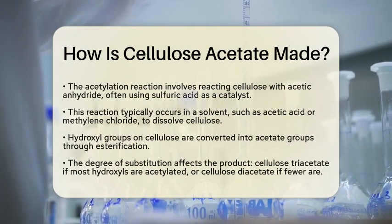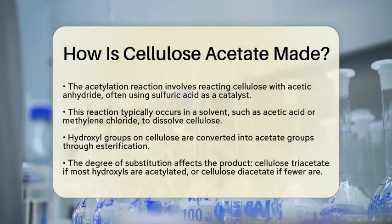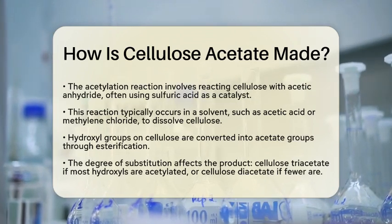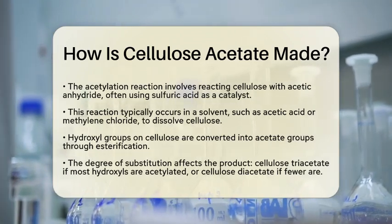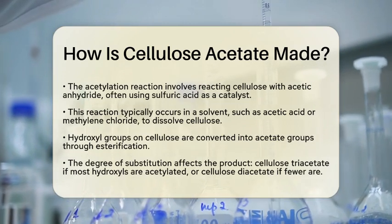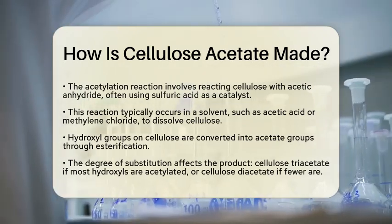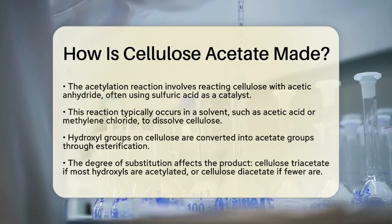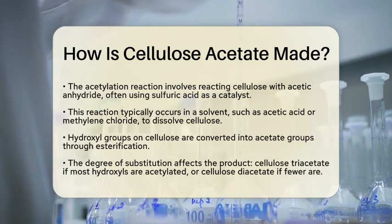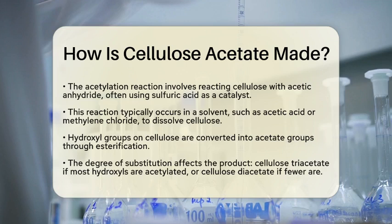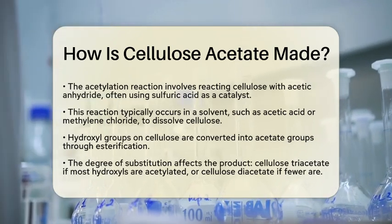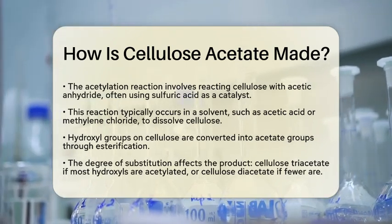The degree of substitution is important here. If we acetylate nearly all hydroxyl groups, we get cellulose triacetate. If fewer acetyl groups are present, we end up with cellulose diacetate. The reaction is exothermic, meaning it releases heat, so we need to cool it down to keep everything under control. Mechanical mixing is also essential to ensure that the reaction is uniform throughout the cellulose mass.